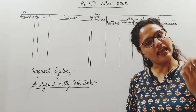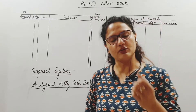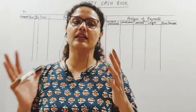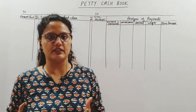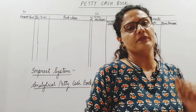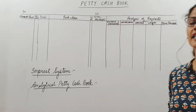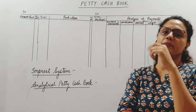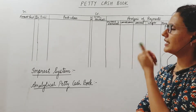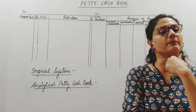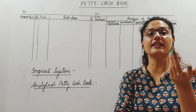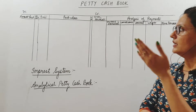So the cashier is one employee and the petty cashier is also an employee — they are given different responsibilities. The cash book will be prepared by the cashier, and the petty cashier will prepare the petty cash book. He will take care of the small expenses.